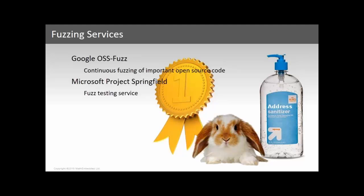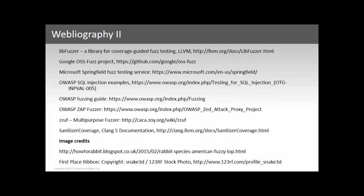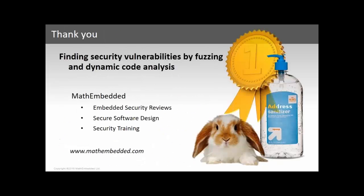I said this isn't the sort of thing you could build into your continuous integration system, but that's exactly now what Google are doing — continuously fuzzing each new release of open source code they consider important. And if you pay Microsoft, they will do some fuzzing for you as well. Thank you.